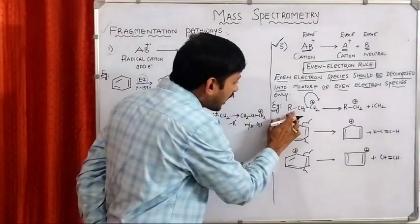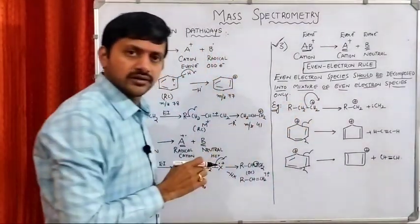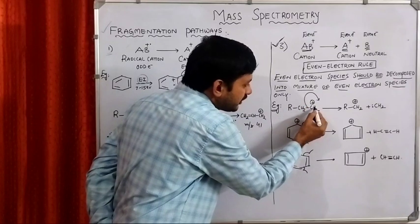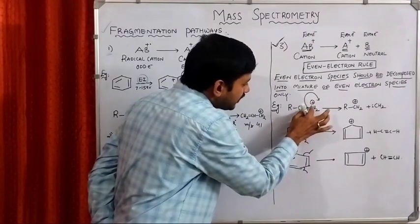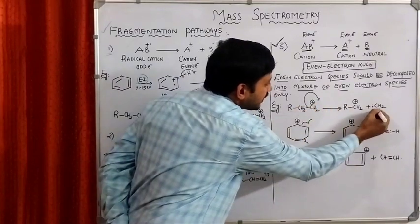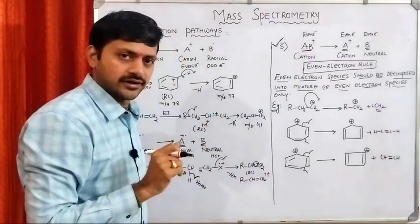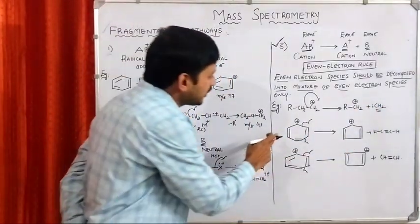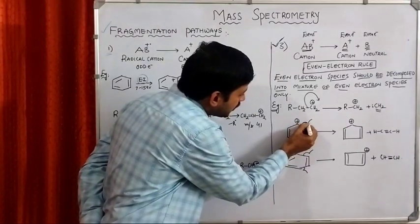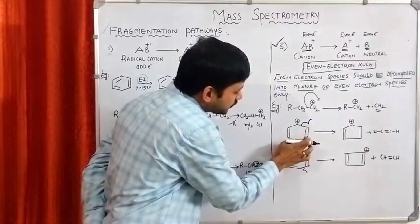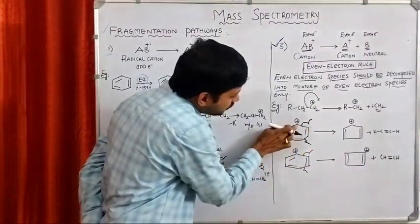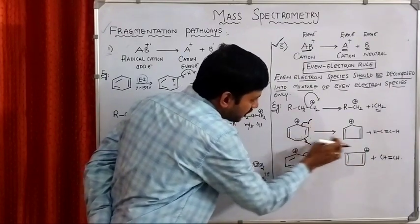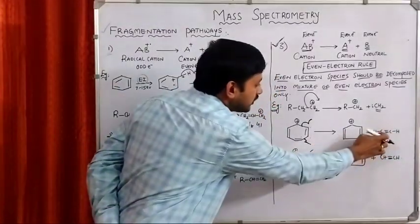See the example: RCH2CH2+, a simple cation. In the cation, we perform heterolytic cleavage — this carbon takes a positive charge and the other takes a negative charge. The positive and negative neutralize, giving a carbene intermediate as the neutral product, while the remaining carbon carries a positive charge — even and even. See the propylium cation: two homolytic cleavages create radicals. These two radicals form a single bond to give one fragment; these two other radicals form a pi bond to give acetylene — a neutral molecule. So we get a cation plus a neutral molecule.